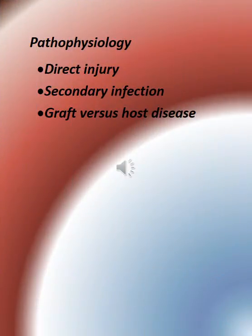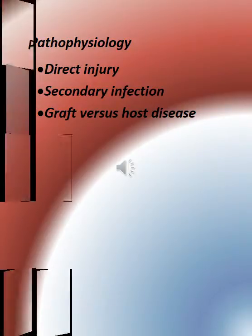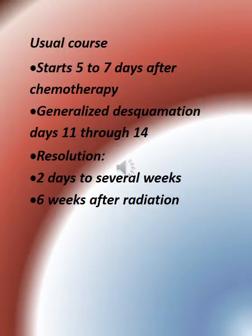Pathophysiology: causes include direct injury, secondary infection, and graft-versus-host disease. Usual course: starts 5 to 7 days after chemotherapy, generalized days 11 through 14, then resolution.